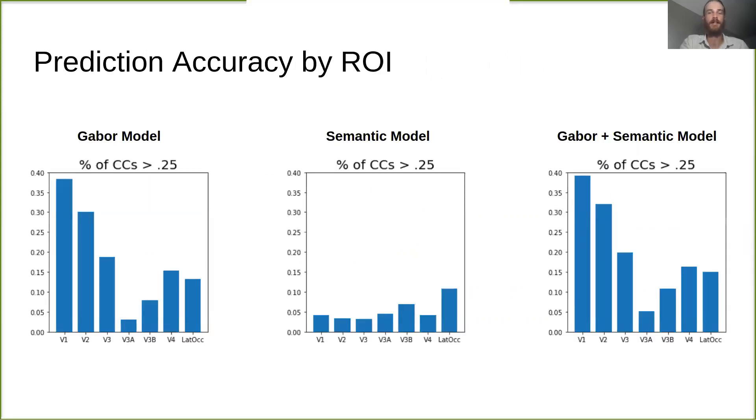And here we have the same result but split into ROIs. Our Gabor model performed much better in early visual areas, whereas our semantic model performed much better in more anterior visual areas, in line with the well-accepted hierarchical structure of visual cortex.